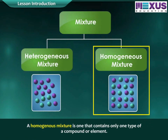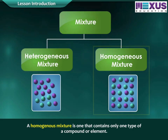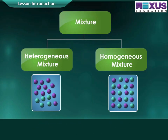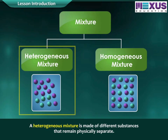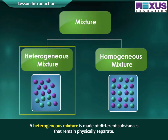A homogeneous mixture is one that contains only one type of a compound or element. A heterogeneous mixture is made of different substances that remain physically separate.